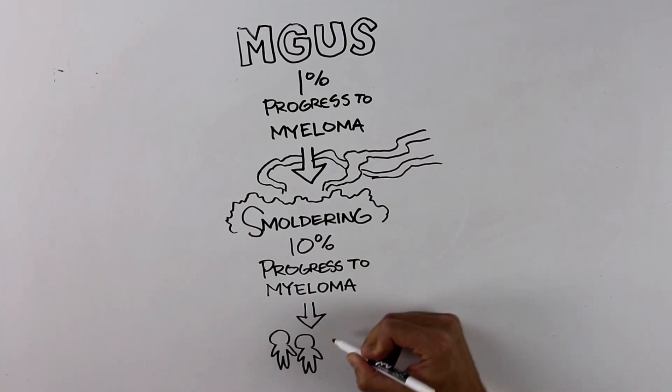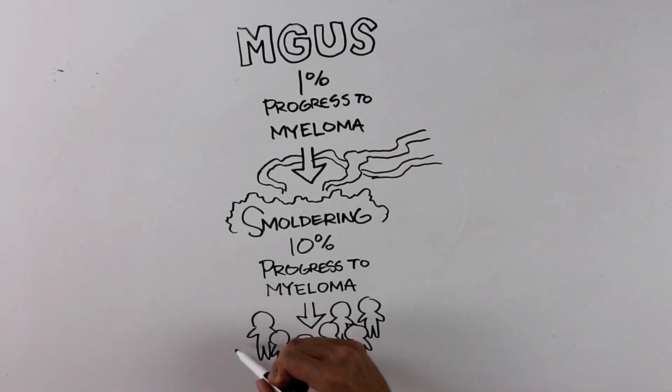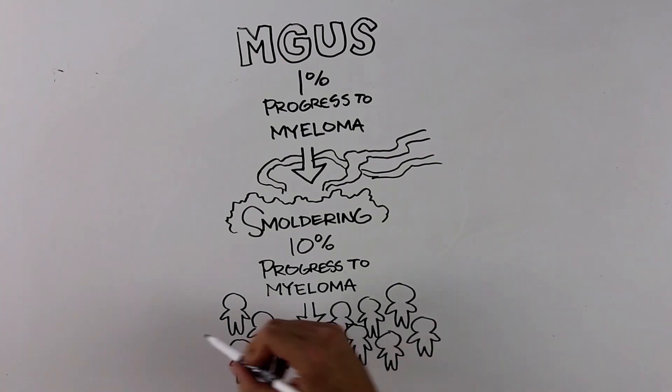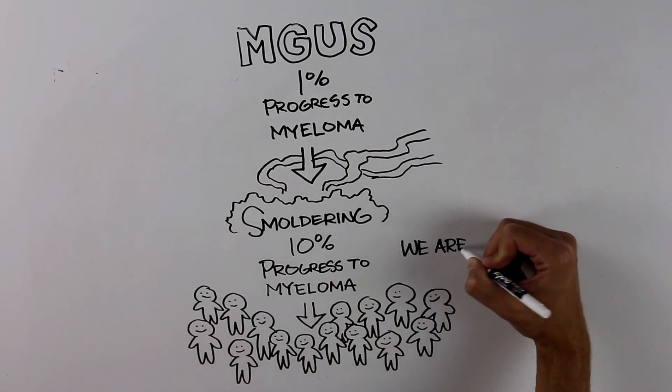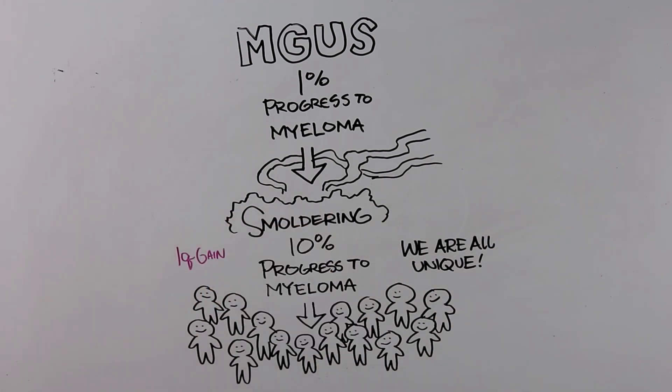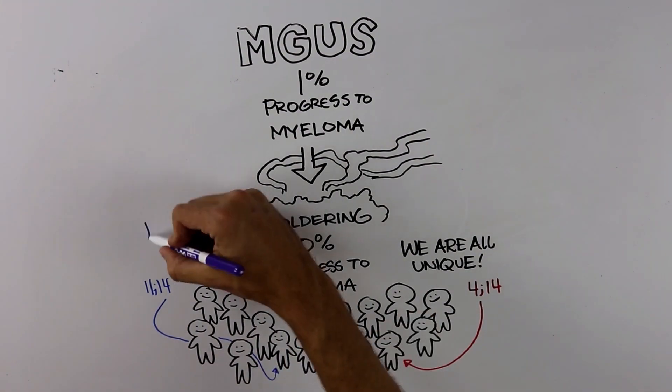Multiple myeloma is not a single disease. There are different genetic types of myeloma. Some are normal risk, and some are high risk where chromosomes get swapped or deleted. So no myeloma patient is exactly the same. Additionally, the genetics of myeloma can change and become more aggressive over time.